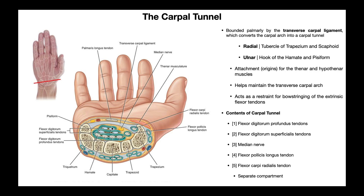A little closer to the thumb side, we have the median nerve shown in yellow. The only nerve that actually travels in the carpal tunnel is the median nerve. Up here you have the ulnar nerve, and then not shown — over on the thumb side, a little more dorsally — you'd have the superficial radial nerve. The median nerve is the only one to go through the carpal tunnel.